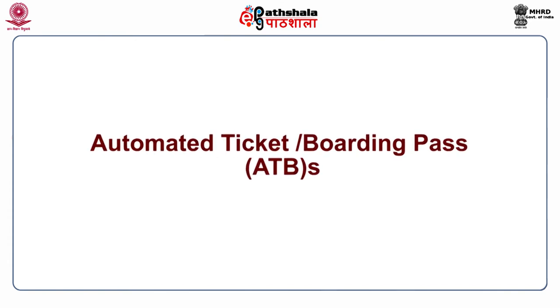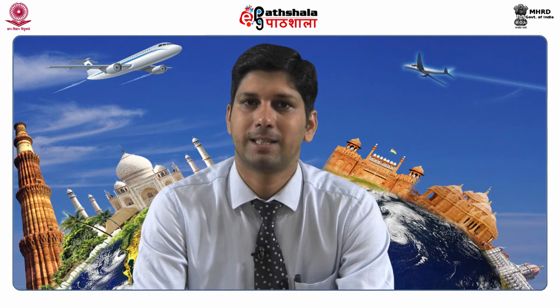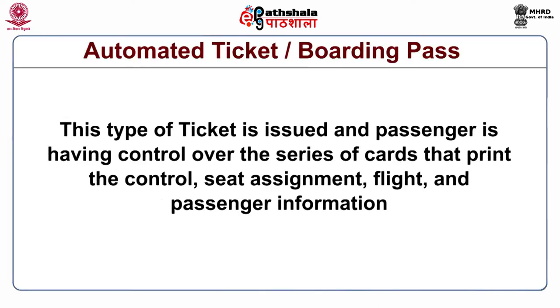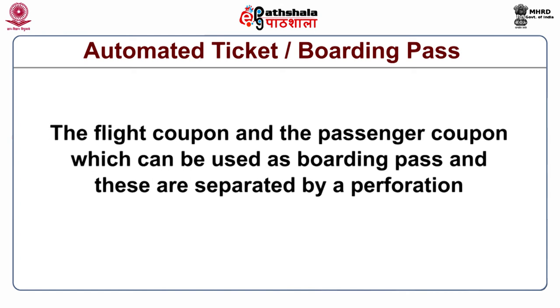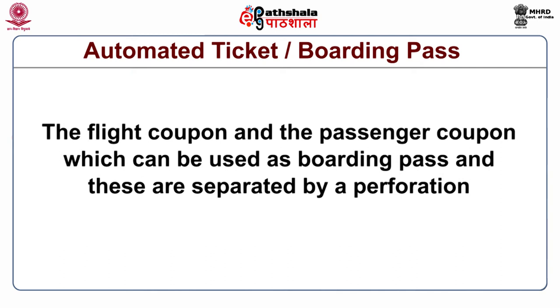The Automated Ticket or Boarding Pass (ATB) is issued in a single copy with no separate coupons — each coupon is imprinted separately. The passenger holds a series of cards that print control, seat assignment, flight, and passenger information. It comes along with valid flight coupons per sector and the passenger's receipt. This type of ticket is generally issued by principal airlines or carriers, and has two portions: the flight coupon and the passenger coupon, which can be used as a boarding pass, separated by a perforation.